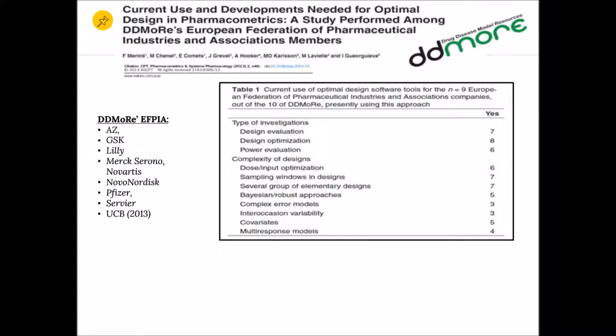Optimal design approaches are often seen as a sophisticated approach developed by smart academics, but used by only a few pharmacometricians in pharma companies. This is one of the reasons why, at the beginning of the DDMoRe project, we ran a survey about the current use and development needed for optimal design in pharmacometrics. At the start of the DDMoRe project, 10 pharmaceutical companies were involved — there are now 11 — and 9 out of 10 answered the survey. Most of the EFPIA companies use optimized design approaches to optimize or evaluate designs, and two-thirds use them for program evaluation.